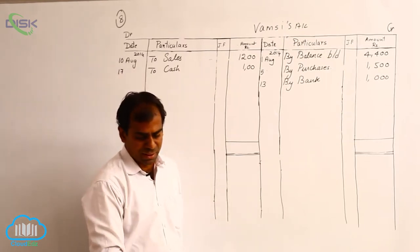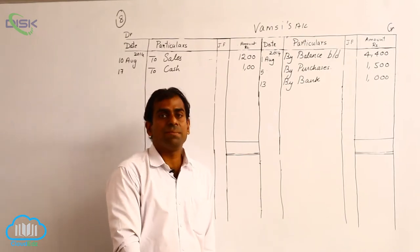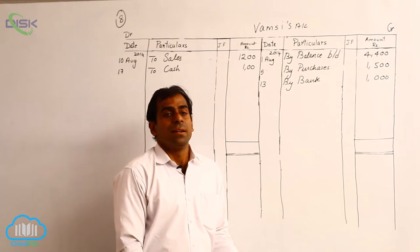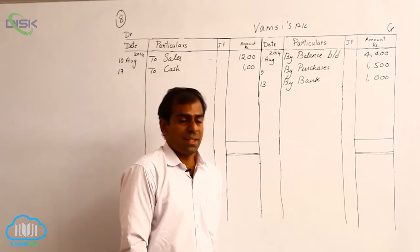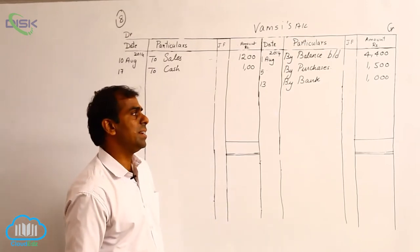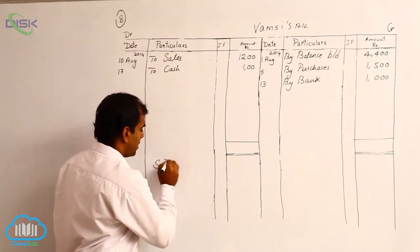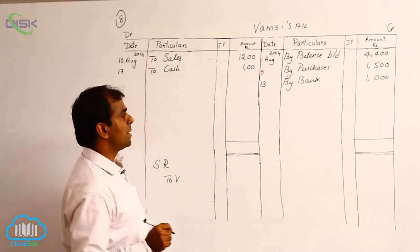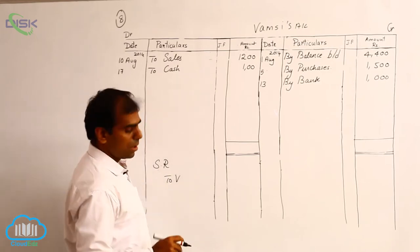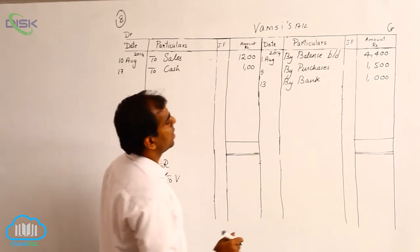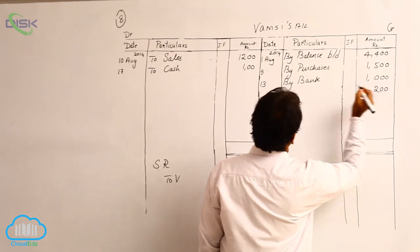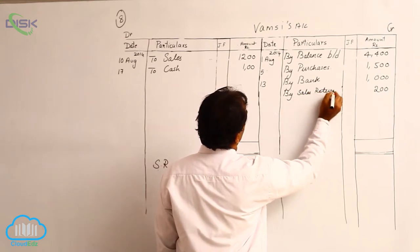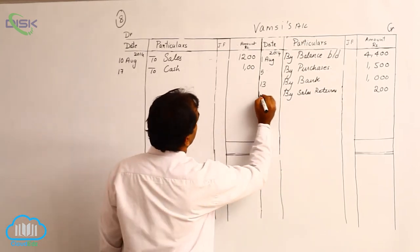The next transaction is on 23rd — Vamsi returned goods worth 200. That means Vamsi has returned back to the business goods which he purchased previously. From the business point of view, it becomes sales return. The journal entry is sales returns account debit to Vamsi's account. So we have to credit Vamsi's account with 200 on the credit side. The reason is sales returns. The date is 23rd.